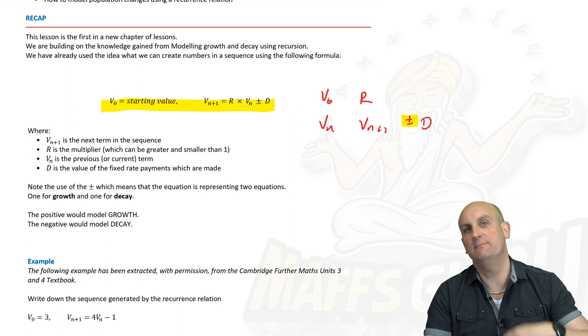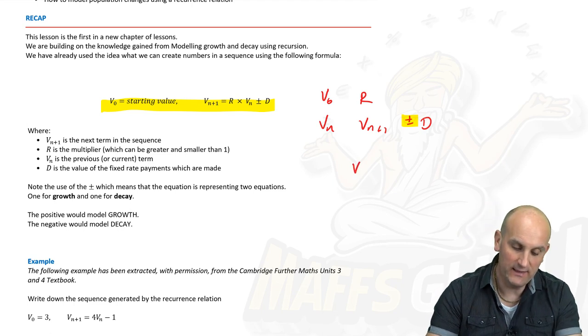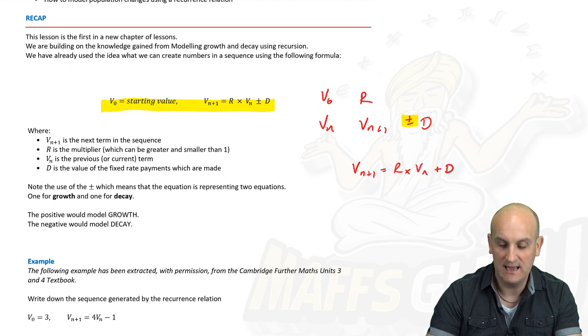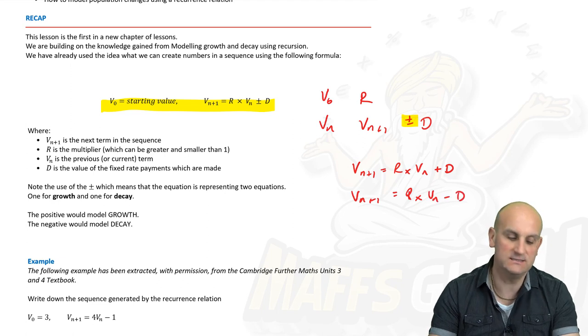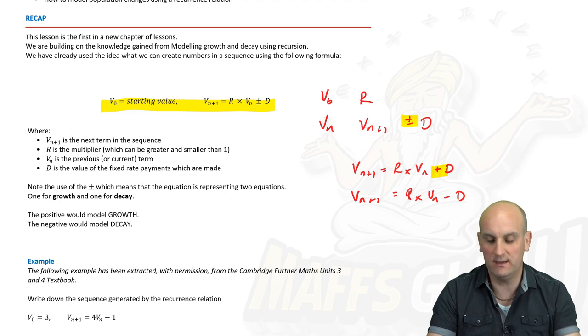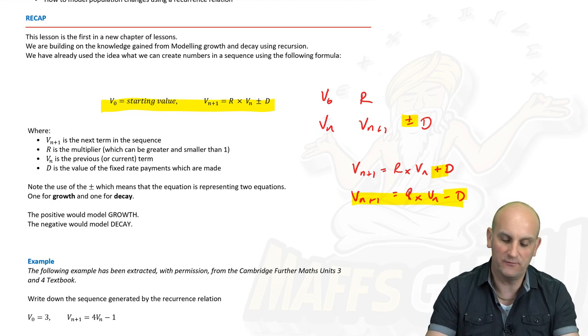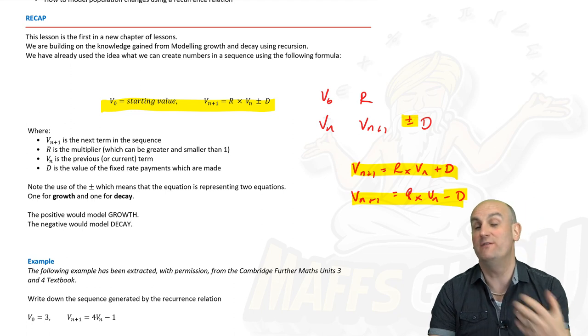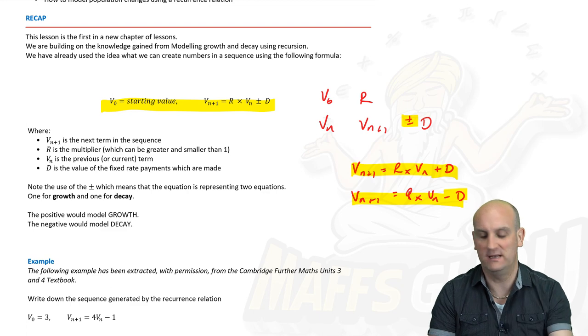V_{n+1} is my next term, and then this plus or minus D is a fixed payment I'm going to make. Now we don't always make a payment but it's there if we need it. Now the important thing here is this plus/minus thing. It's a wonderful way in mathematics to enable us to have two formulas written as one. So realistically speaking, that means that we've got V_{n+1} = R × V_n + D and V_{n+1} = R × V_n - D. Now obviously in this situation we're adding something into our account so probably it's growing. Minus D we're taking it off, so this may well be for a loan where I'm having some sort of interest added but then I'm taking off a payment. Here may be for an investment where interest is being added and I'm putting more money in.